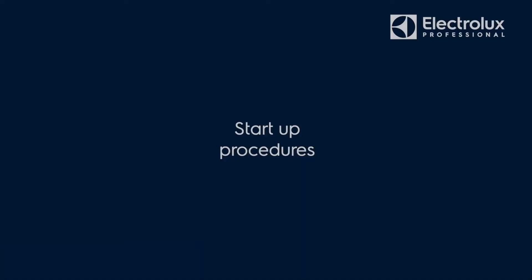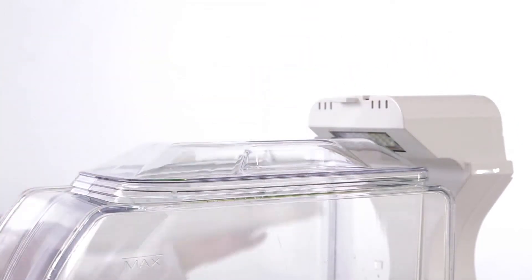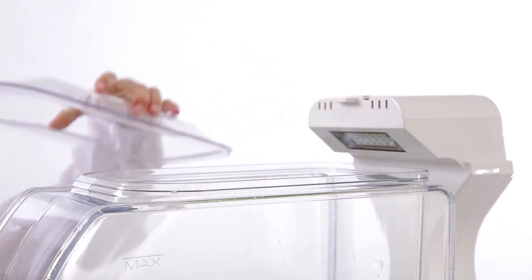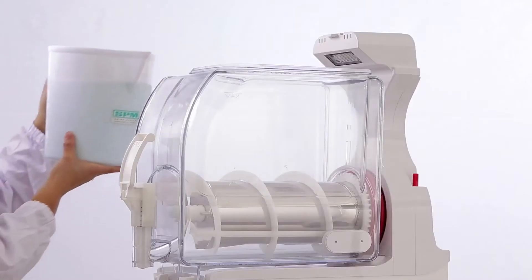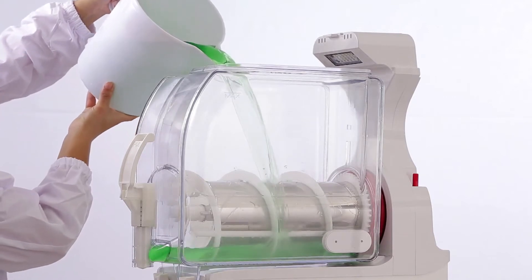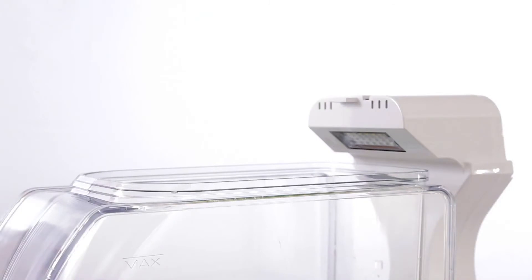Start up procedures. Prepare the mix following the information on the producer's label. Remove both the main and secondary cover and pour the mix inside the i-tank bowl. Position the secondary and main cover.